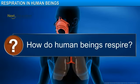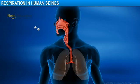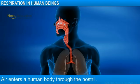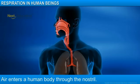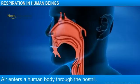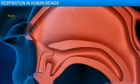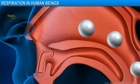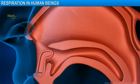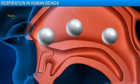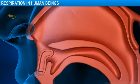In this module, you will learn about respiration in human beings. How do human beings respire? In human beings, air is drawn into the body through the nostrils. Nostrils are lined with fine hairs and mucus that filter the air as it passes through.